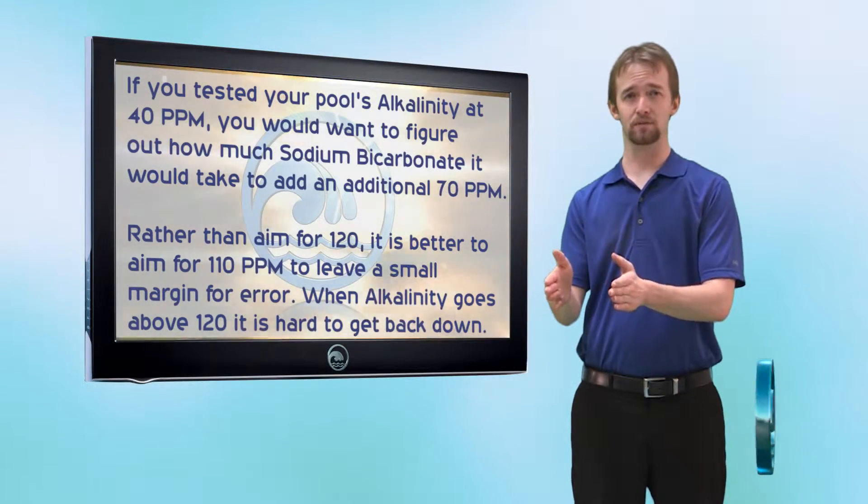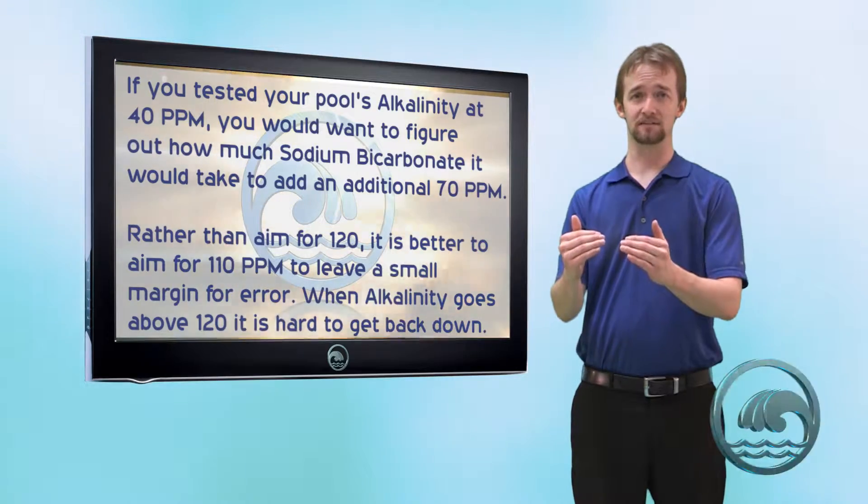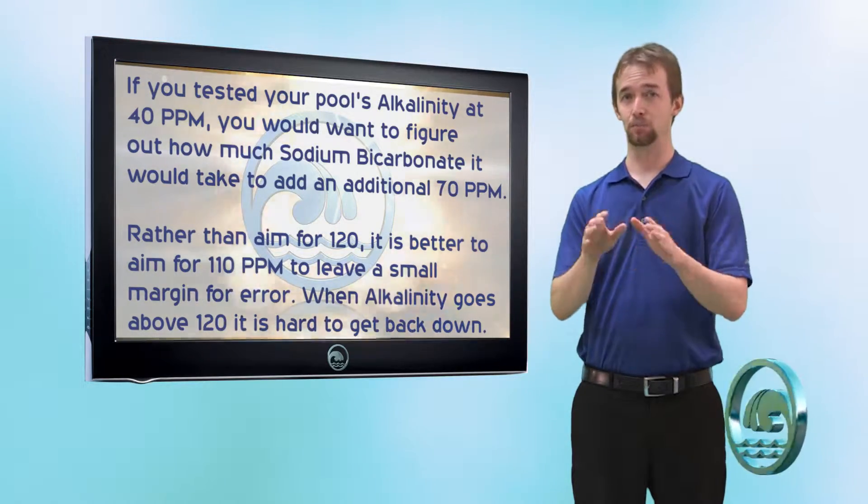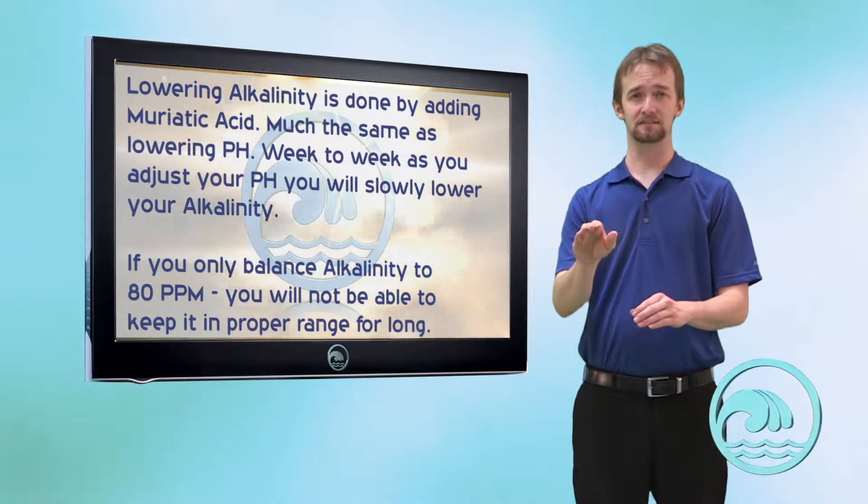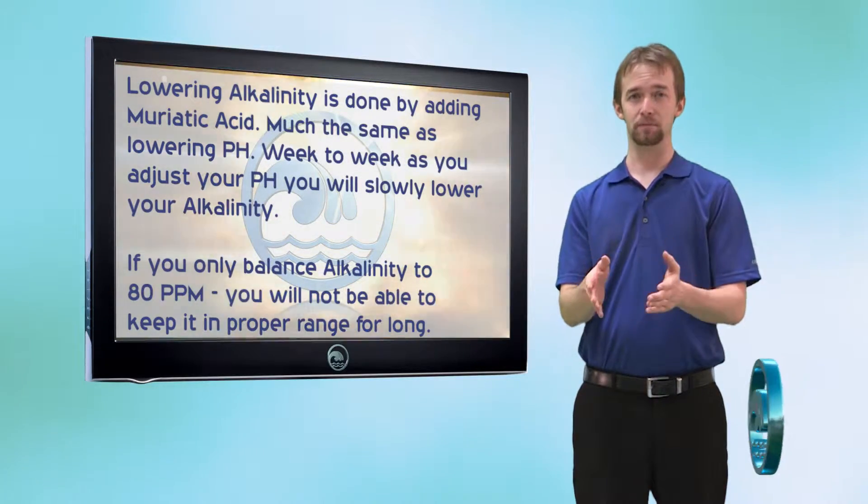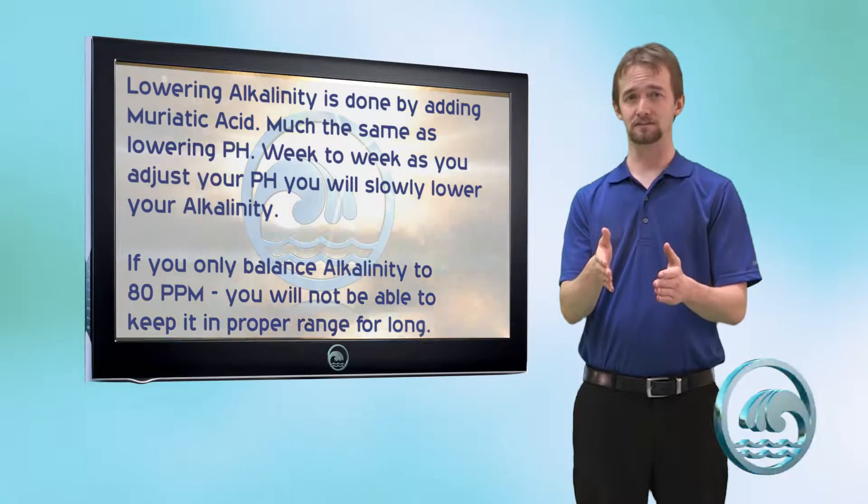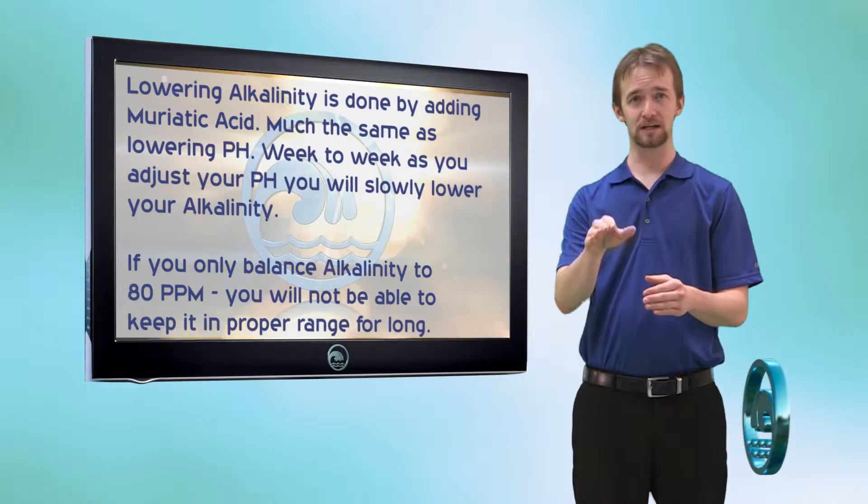Why do we want to shoot for the higher end of the range? Well, to raise alkalinity, we use sodium bicarbonate. But to lower it, we use muriatic acid. Muriatic acid lowers alkalinity. If you remember, muriatic acid is also what you'll be using regularly to lower your pool's pH.